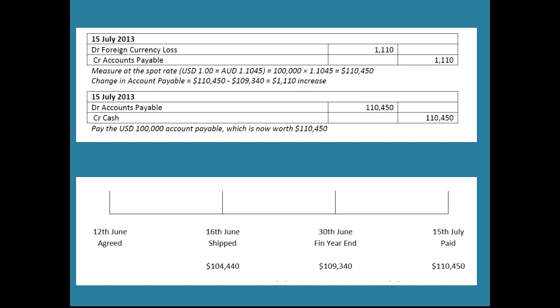To summarize: we agreed to the purchase, the shipment happened and we took title, we recognized it. At financial year-end we still had the payable and it changed in value — we picked that up. Then we paid it.